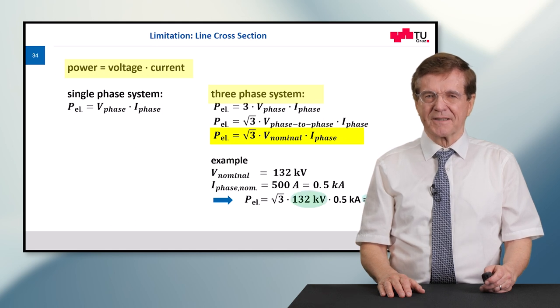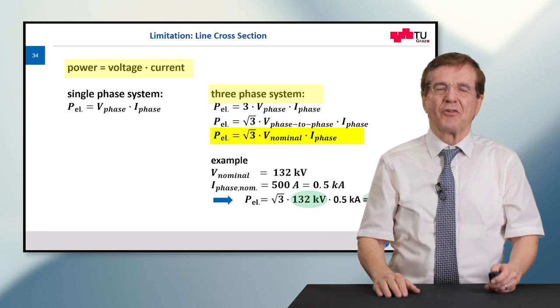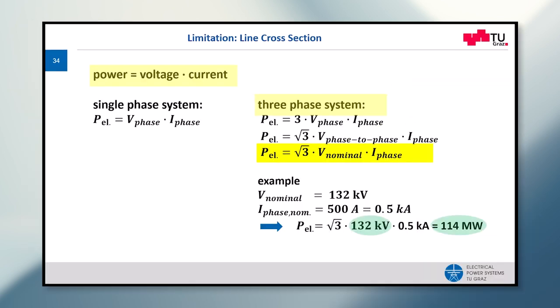Now let's compare two figures. 132 kV results in 114 megawatts. And this leads to a general rule. This means kilovolts is approximately, as a rough estimation, the same as the megawatts. So this is very crude but practical.